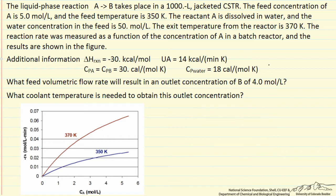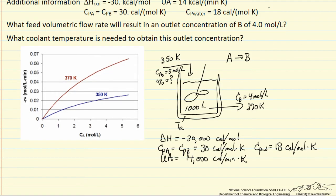So the first thing we want to do is draw a diagram, label the information that we know. So I've drawn representation of a continuous stirred tank reactor, labeled the information that we know.